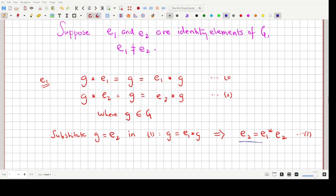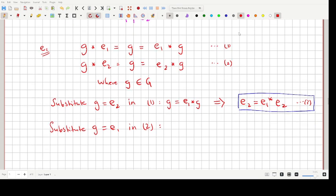We will substitute in a similar way, substitute G equals E1 in equation 2. In this equation 2, we'll just consider the left-hand side of equation 2. The left-hand side of equation 2 is G star E2 equals G.